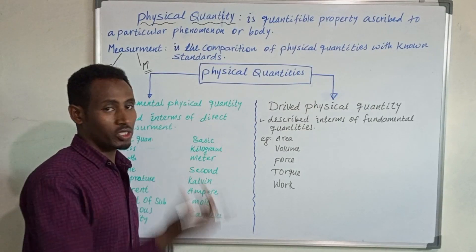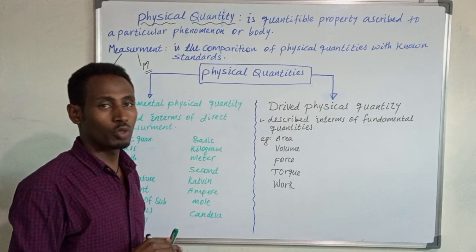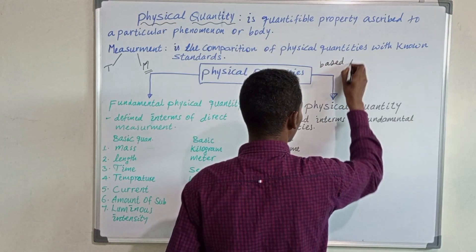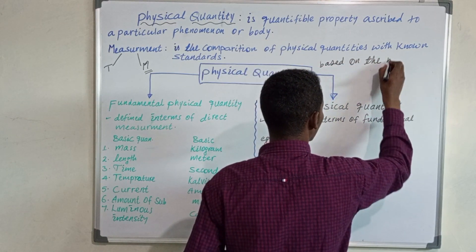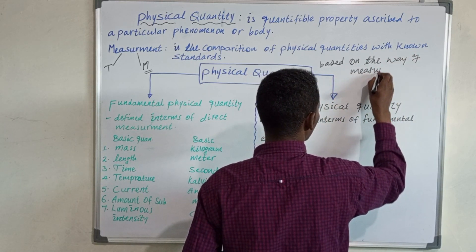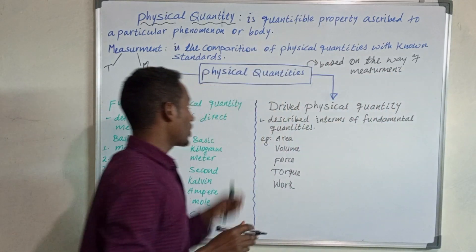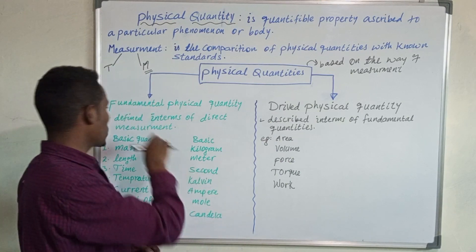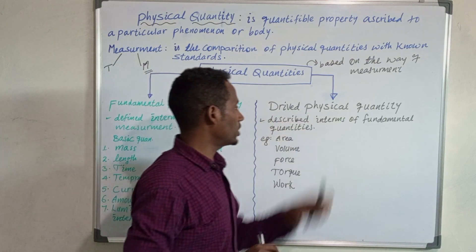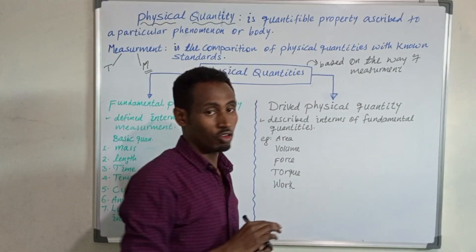We are going to classify physical quantities based on the way of measurement. Based on the way of measurement, we can classify physical quantity into two: the first one is known as fundamental physical quantity or basic physical quantity, and the other one is derived physical quantity.